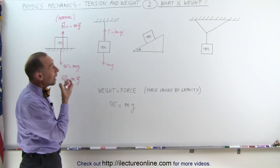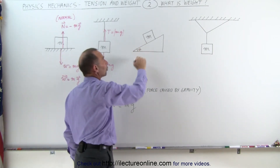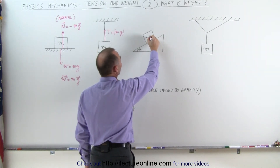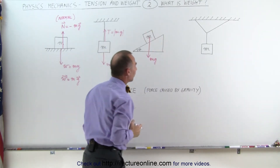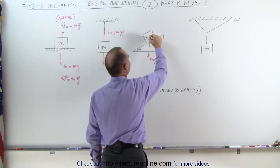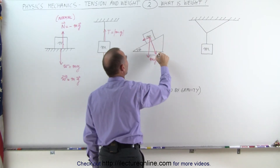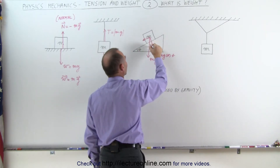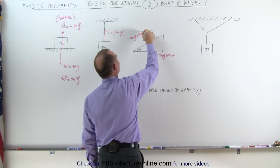How do we deal with it when an object is sitting on an inclined plane where the surface makes an angle of theta with the horizontal? The weight still acts from the center of gravity of the object and pulls down towards the center of the earth. We divide that weight vector into its perpendicular component and its parallel component to the surface. The perpendicular component becomes mg times the cosine of theta, and the parallel component becomes mg times the sine of theta.